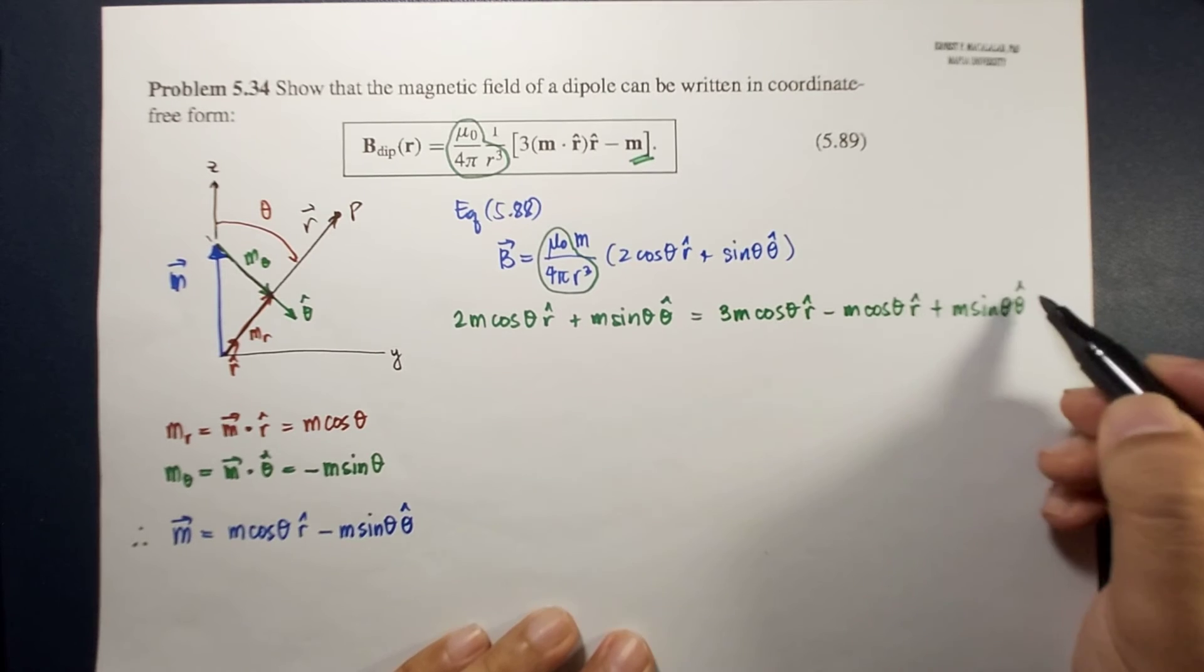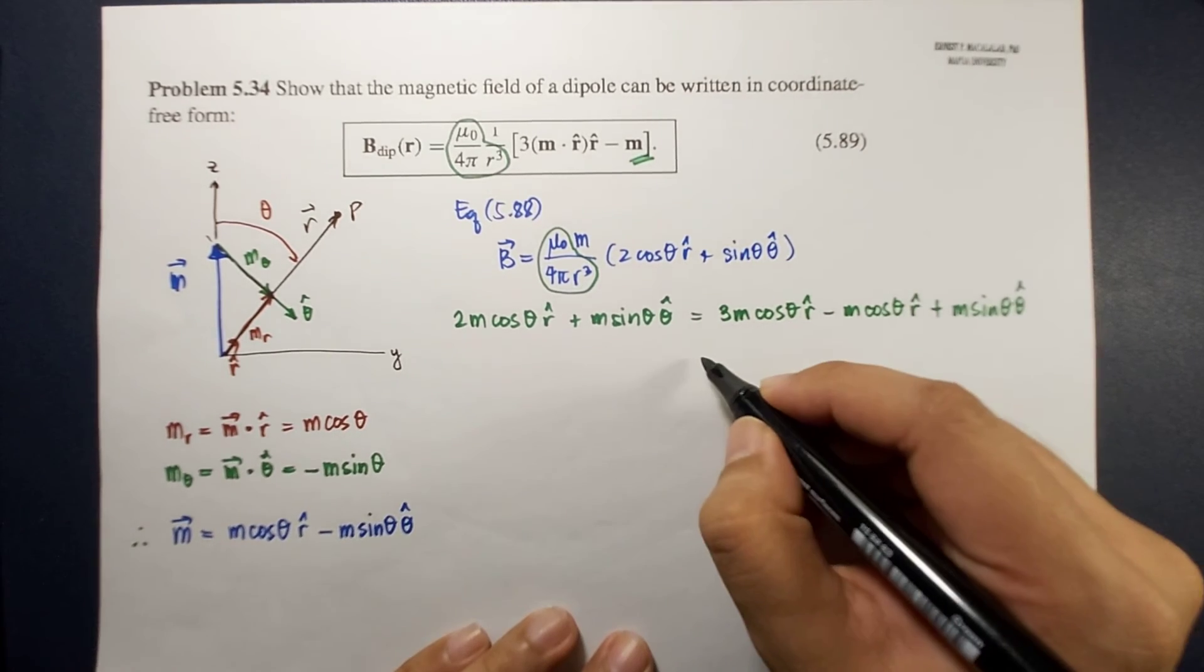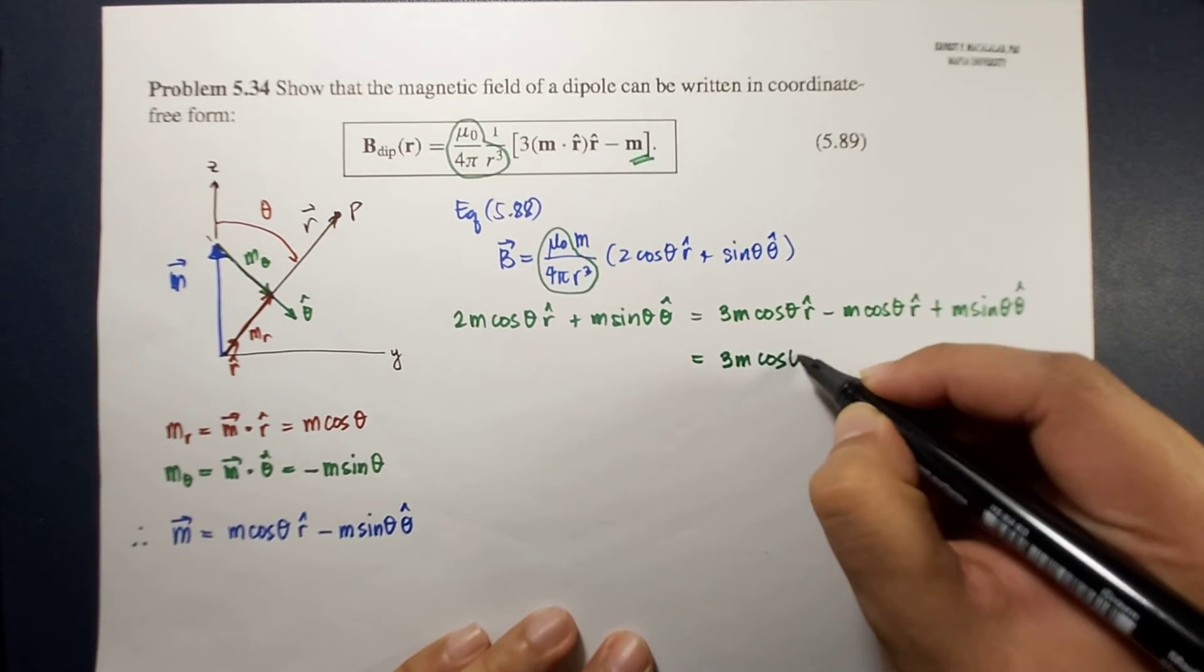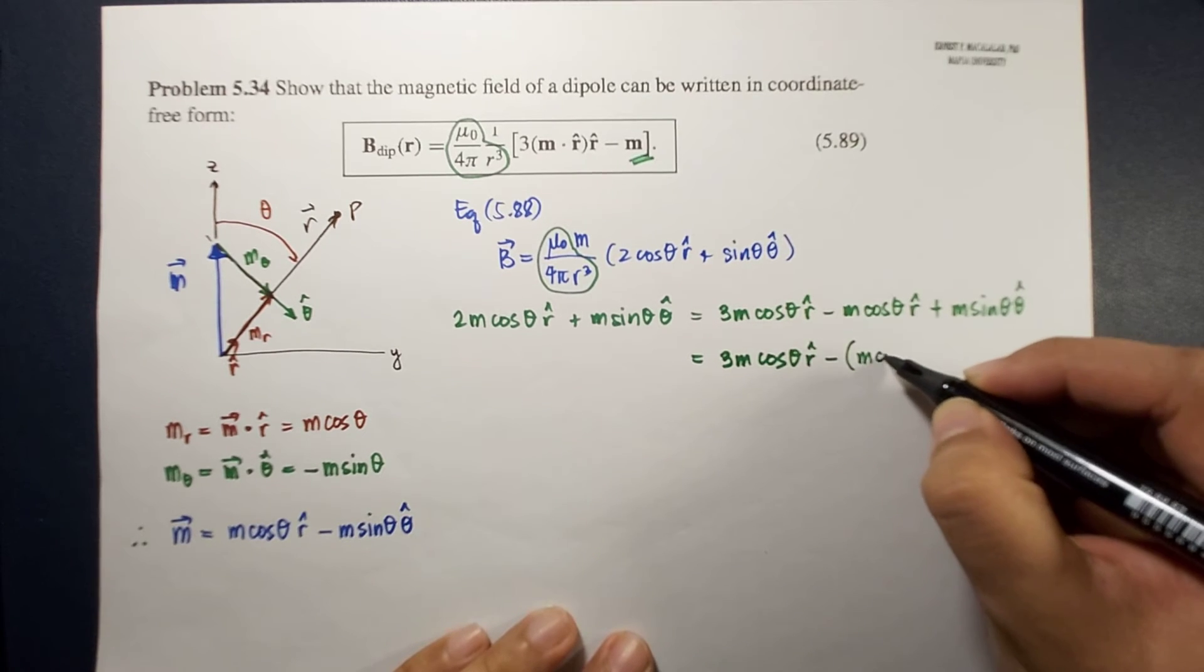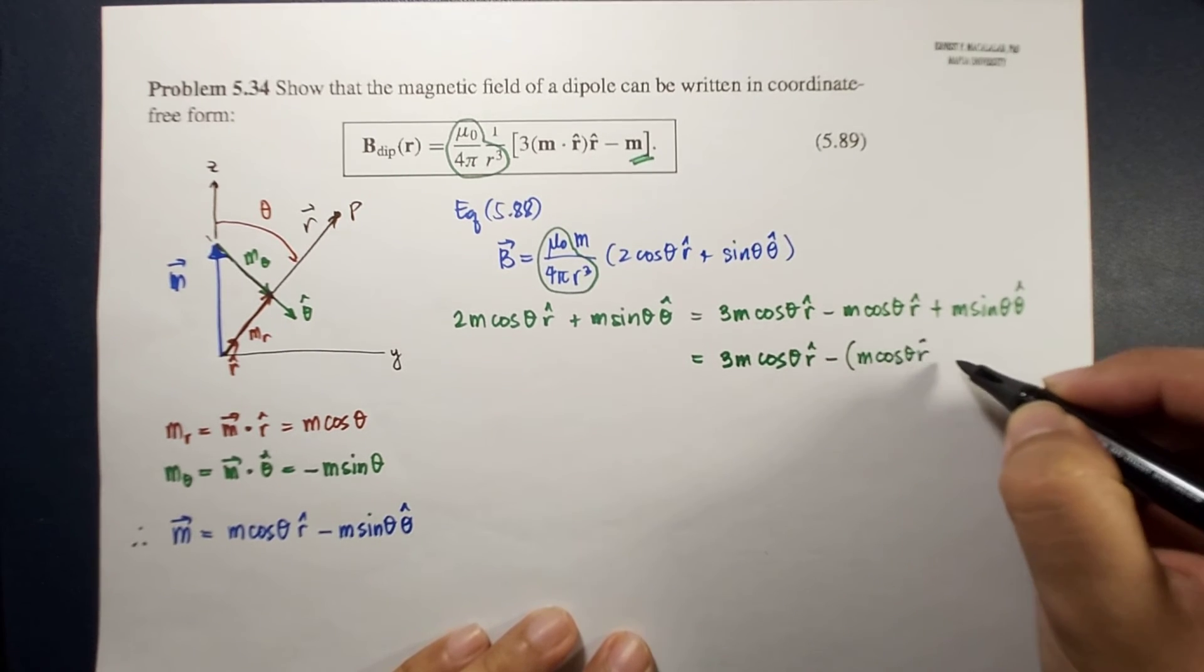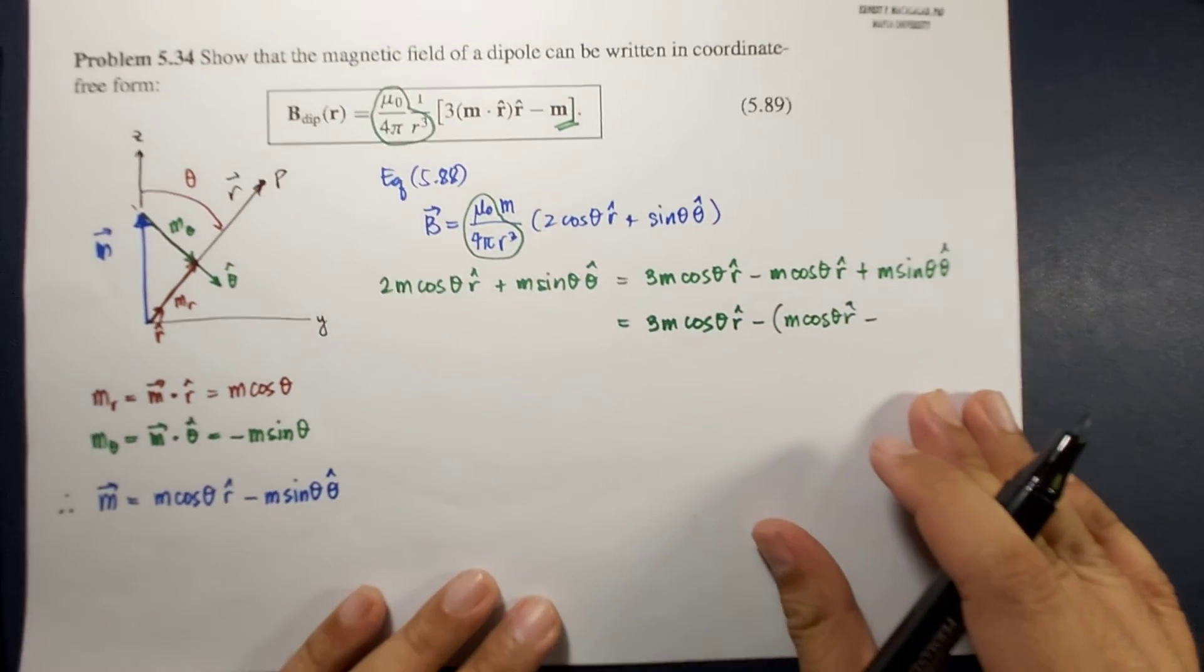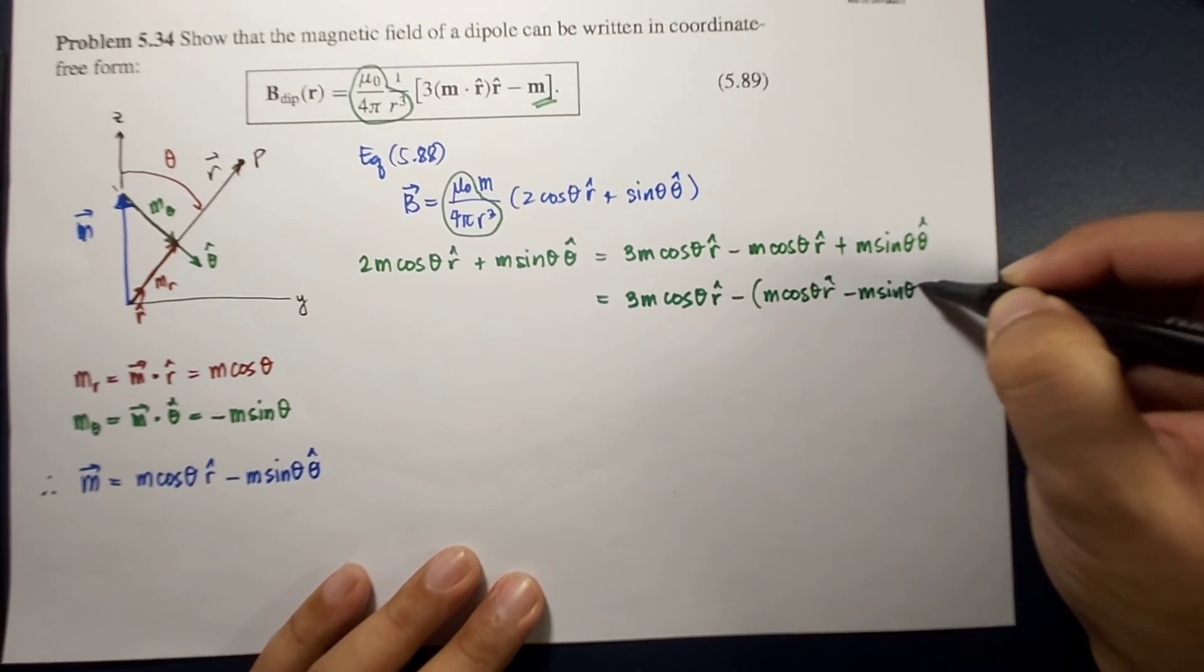So if we're going to group this together, this becomes a negative. So this is now equal to 3m cosine theta r hat minus m cosine theta r hat minus m sine theta theta hat,